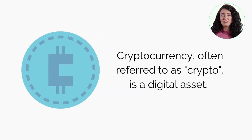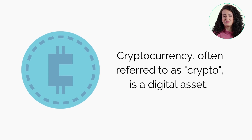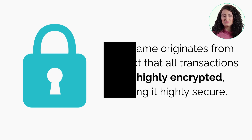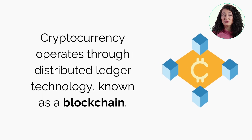Cryptocurrency, often referred to as crypto, is a digital asset. The name originates from the fact that all transactions are highly encrypted, thus making it highly secure. Cryptocurrency operates through distributed ledger technology known as a blockchain.